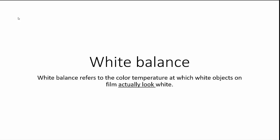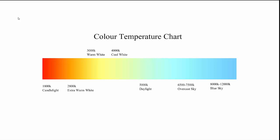To understand white balance in more detail, let's look at the color temperature chart. As lighting designers, we know color temperature ranges from warm white to cool white. Warm white ranges from 2500 Kelvin to 3000 Kelvin — these are warmer tones. At 4000 Kelvin you have cool white, at 5000 Kelvin you have daylight, and at 6500 to 7500 Kelvin temperatures become cooler. The scale extends from around 1800 Kelvin all the way to 8000–12,000 Kelvin.